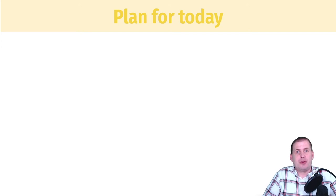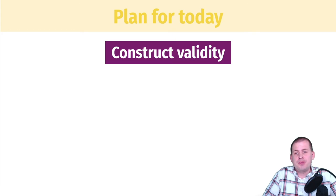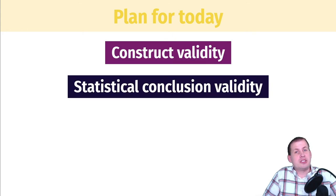But these are kind of the core four, the most important to consider when you are evaluating a study or an evaluation to see if it's good. So first we'll talk about something called construct validity and then statistical conclusion validity. These are fairly easy ones to talk about and to investigate.